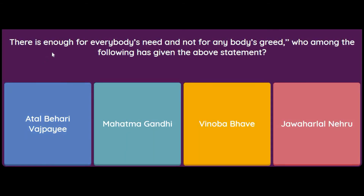'There is enough for everybody's need and not for anybody's greed' — who gave the above statement? Atal Bihari Vajpayee, Mahatma Gandhi, Vinoba Bhave, or Jawaharlal Nehru? This statement was said by Mahatma Gandhi Ji — that we have enough things for our needs, but we should not be greedy.